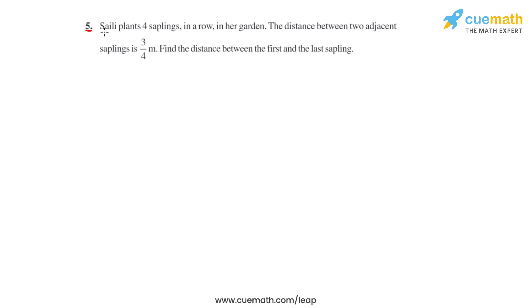Question number 5 says that Saili plants 4 saplings in a row in her garden. The distance between two adjacent saplings is 3 over 4 meters. We have to find the distance between the first and the last sapling.